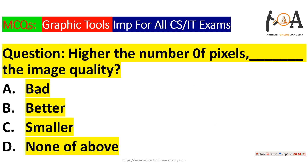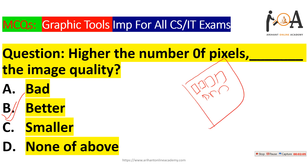The next question is: higher the number of pixels, what is the image quality? If the number of pixels is higher, the quality of image will be better. With fewer pixels, the image gets stretched and each pixel becomes clearly visible. But with a higher number of compressed pixels, you cannot tell it's made of pixels. So higher number of pixels means better image quality — option B is the right answer.